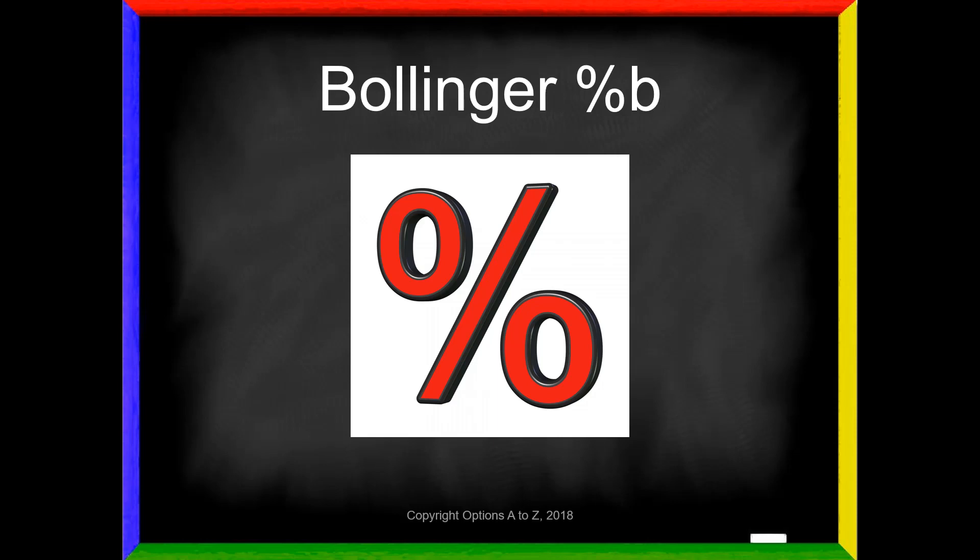Welcome, Options Traders. In this video, I wanted to share another technical indicator with you: Bollinger %B. You might be thinking we've seen that name before with Bollinger Bands, and you're exactly right. You're going to find out that Bollinger %B is Bollinger Bands — it's just a different way of presenting the information. For all the ins and outs of how to read Bollinger Bands, I'll refer you back to that video, but let me show you what Bollinger %B is and why it might be useful.